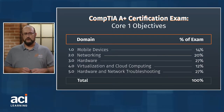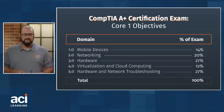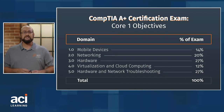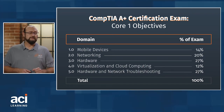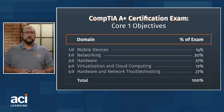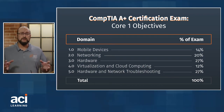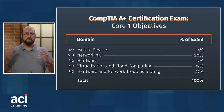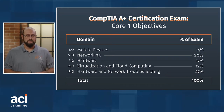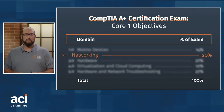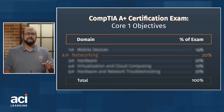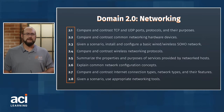When it comes to the Core 1 objectives, they are broken up into five domains. The networking domain, hardware domain, and the hardware and network troubleshooting domain really form the bulk of the overall exam weight. What we're going to focus on more specifically is 2.0 networking, and we're going to look at how the networking domain breaks down.